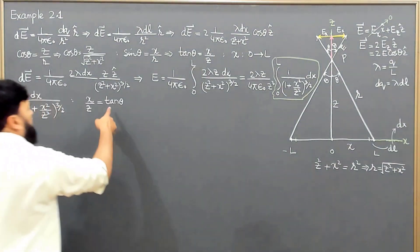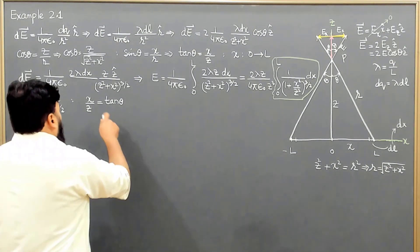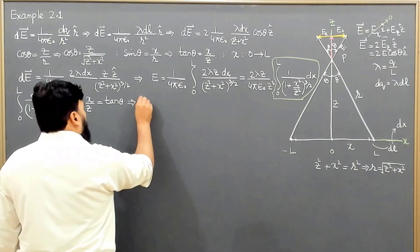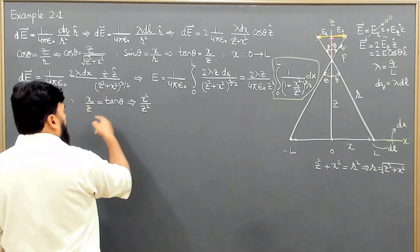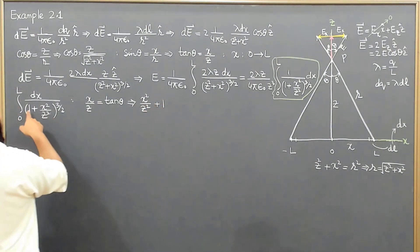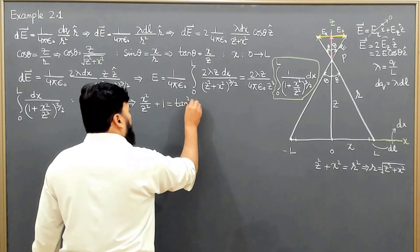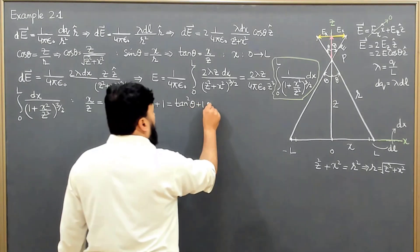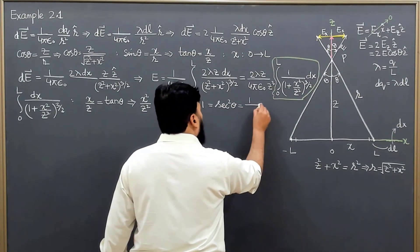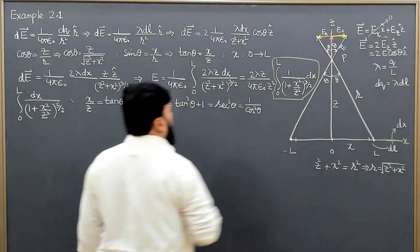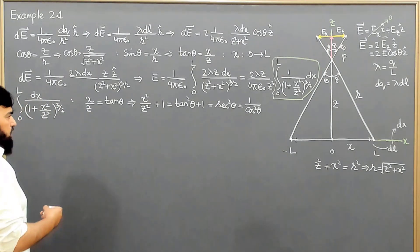I am converting it into trigonometric form because in trigonometric form the solution will become very easy. If we square this and add 1, we get 1 + x²/z², which comes out to be tan²θ + 1. We know that 1 + tan²θ equals sec²θ, and this equals 1/cos²θ. So we have done one conversion.